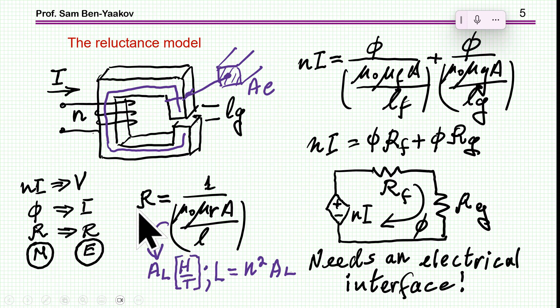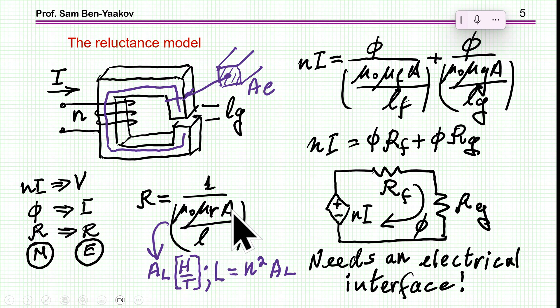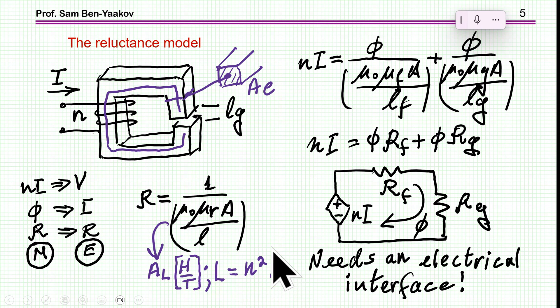Now the reluctance is defined as one over this term. Notice that what's missing here is n-squared. With n-squared, this would be the equation for an inductor: the permeability times area divided by magnetic path length. Without the n, this is like the inductance of one turn. So this is what we define as A_L — the inductance per one turn. And of course, the inductance of the whole winding will be n-squared times this term.